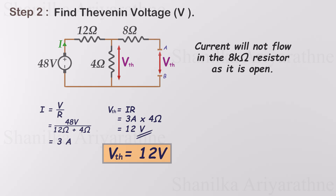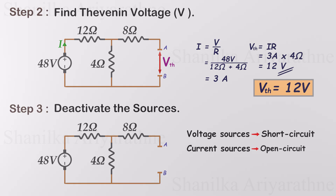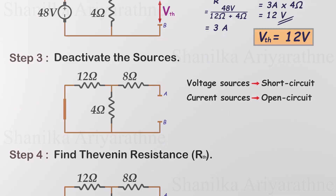Our next goal is to calculate the Thevenin resistance. For that, we have to deactivate all sources. That means deactivate all independent voltage sources by shorting them and all independent current sources by opening them. Here we only have a voltage source, so let's short it. After deactivating the sources, we can calculate the total equivalent resistance across the open load terminals. This is our Thevenin resistance.